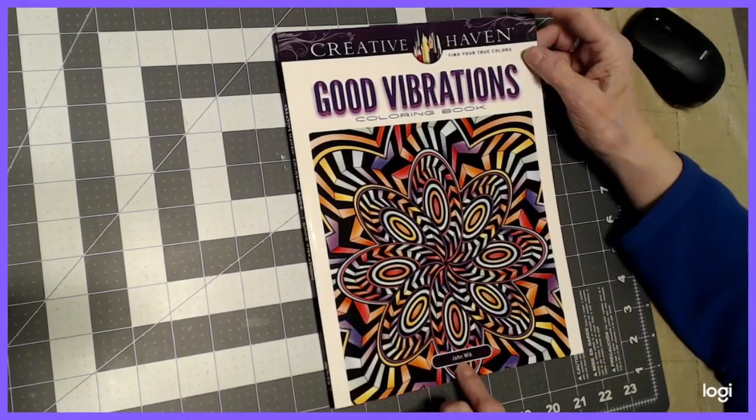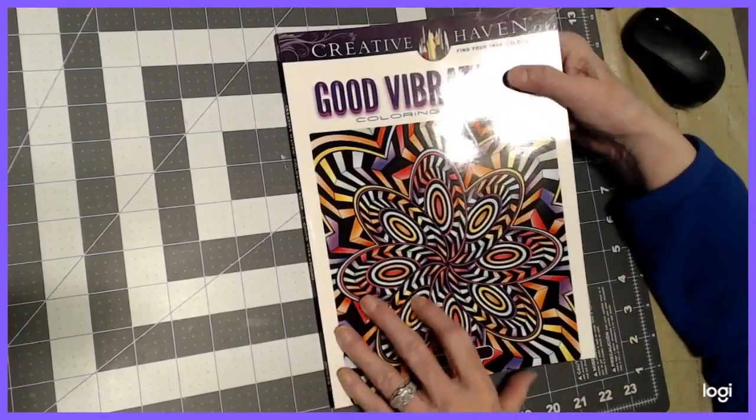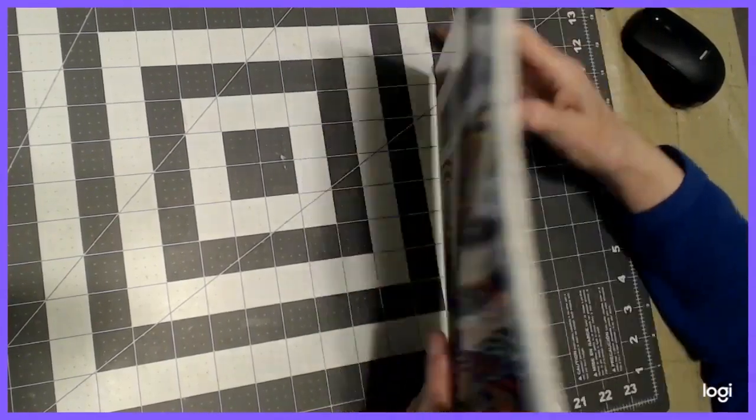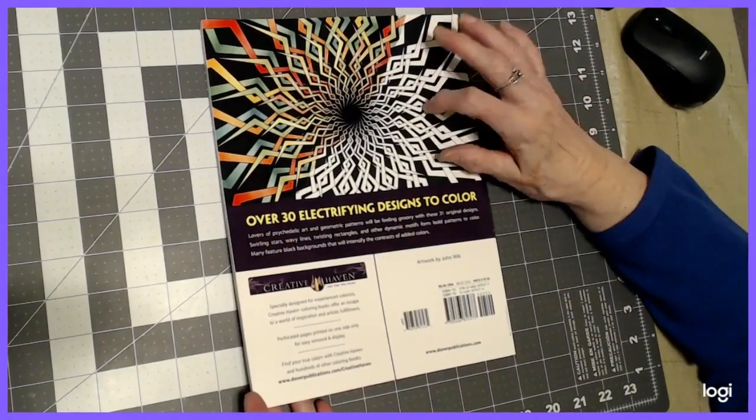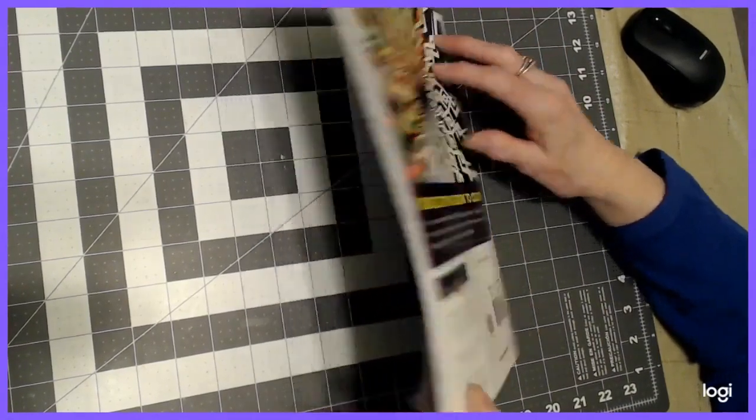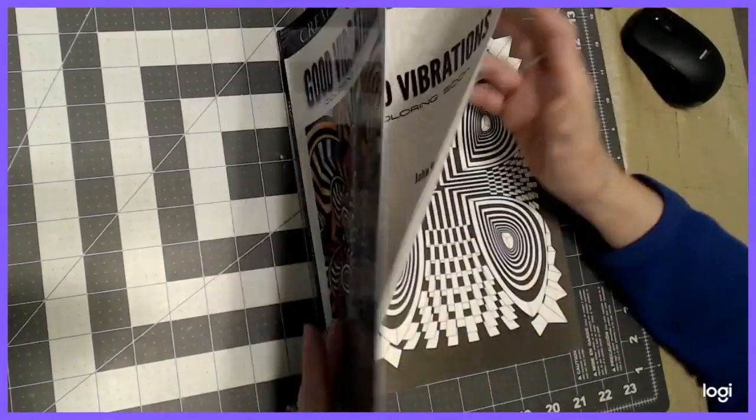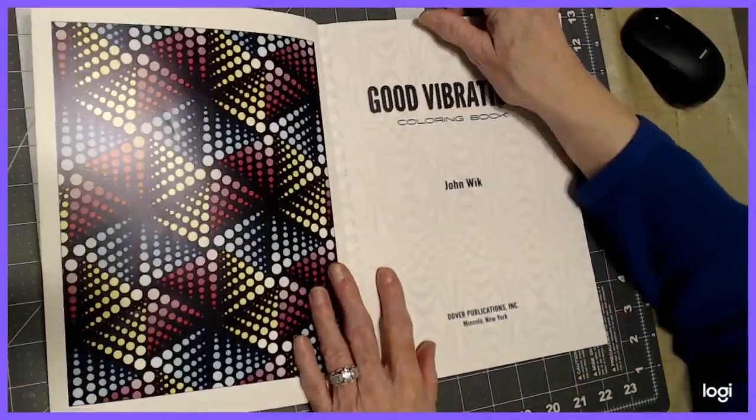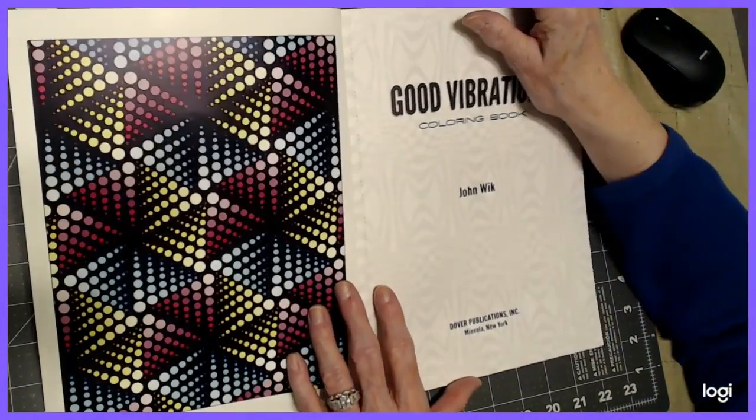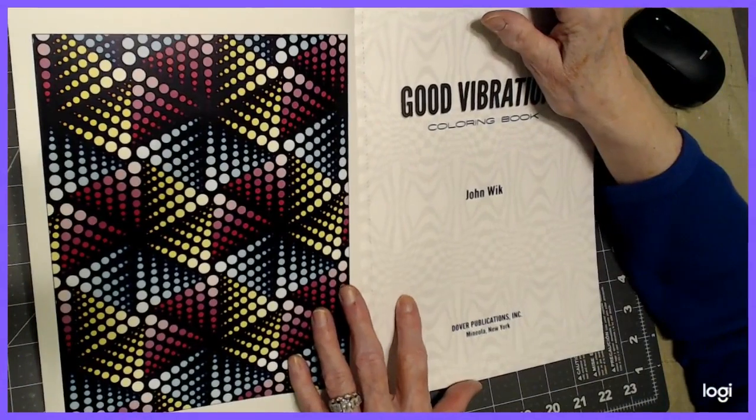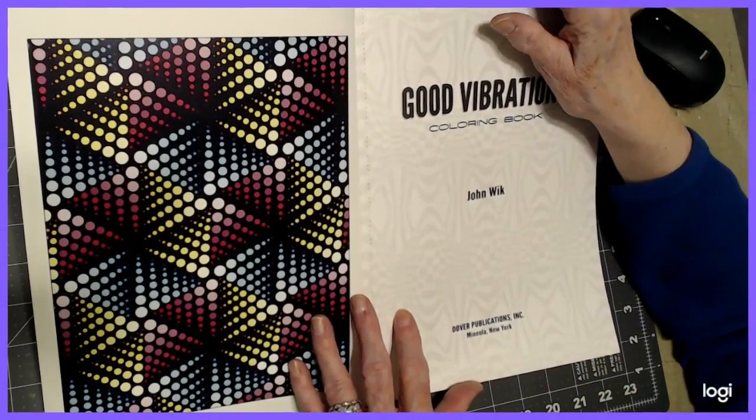And this is by John Wick. This is a Creative Haven book, as you know, good quality books. There's 30 electrifying designs. They show you how to color one of them in here on the front. And this book I got for $2.38 on Amazon. It was on sale. I am not an Amazon affiliate. I bought this with my own money, and any opinion I give is my own. I do not get a commission.